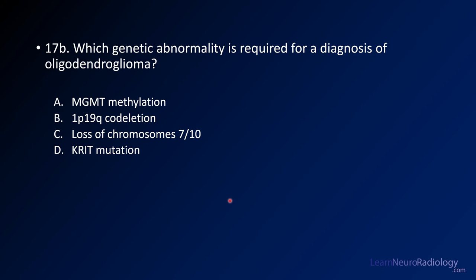Question number two: which genetic abnormality is required to diagnose oligodendroglioma? Options are MGMT methylation, 1p19q codeletion, loss of chromosome 7 and 10, or KRIT mutation.